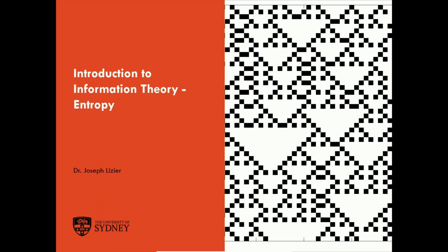In our course on information theory in self-organisation and complex systems, we're going to start at the very start. We're first going to consider entropy, the fundamental measure of information theory, and that is the focus of our first lecture here. This first video is going to talk about our motivation for studying information theory in complex systems in the first place.